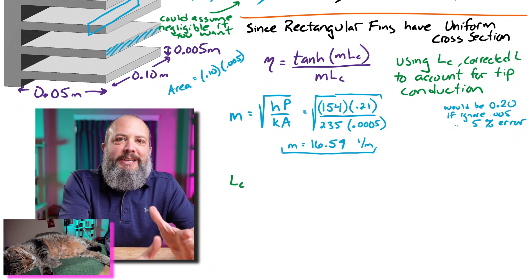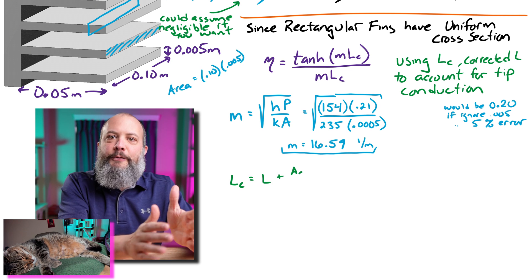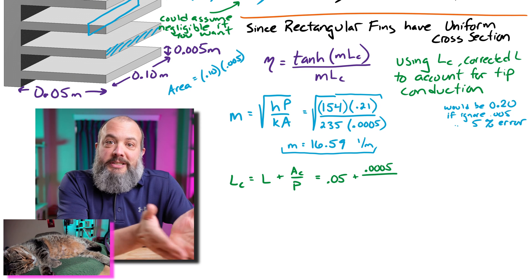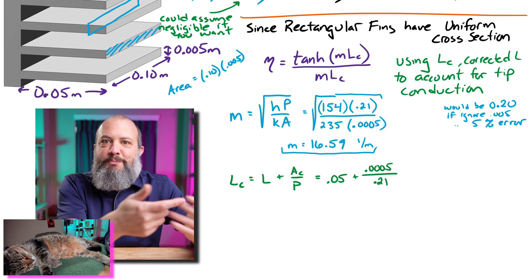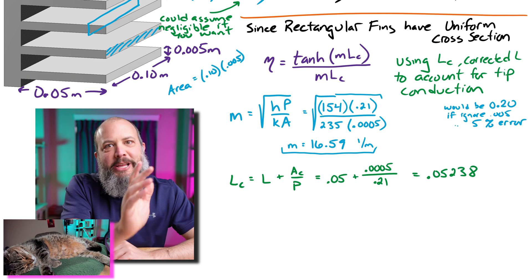And now for the corrected length, which again, the purpose of using corrected length is to make the answer a little bit more accurate by accounting for a little bit of convection out of the tip. And we've already calculated cross-sectional area and perimeter. So there's nothing new besides just plugging in the numbers. And we get a corrected length of 0.05238.